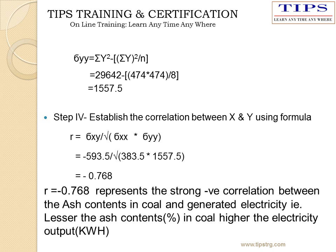By putting these values into the correlation equation R equals sigma xy divided by the square root of sigma xx times sigma yy, we will get R equal to minus 0.768. This represents a strong but negative correlation between the ash content in the coal and the generated electricity.